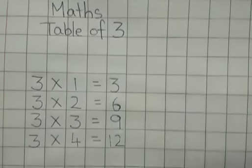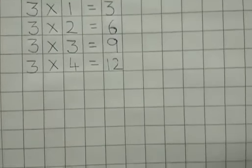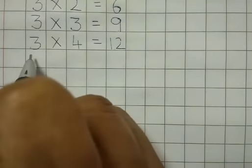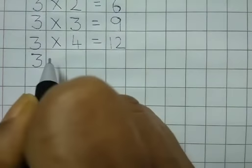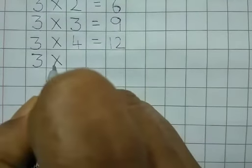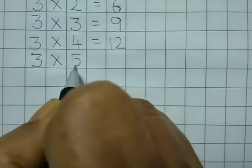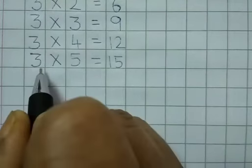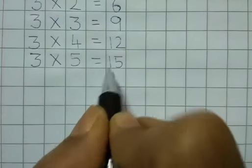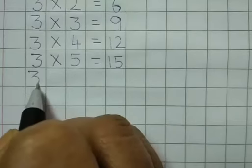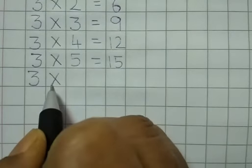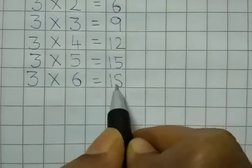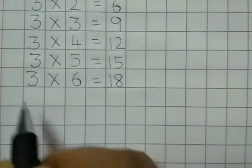Are you saying with me, children? Say with me, okay? Three — multiplication sign — five is equal to fifteen. How will you read? Three fives are fifteen. Three — the sign — six is equal to eighteen. Three sixes are eighteen.